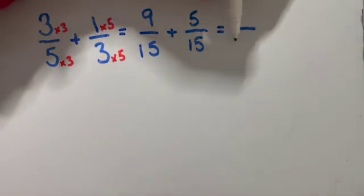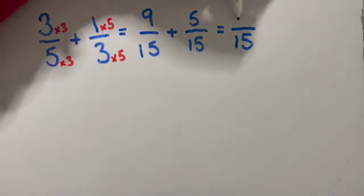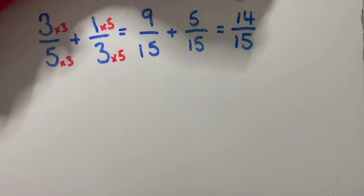So remember, if they're the same, the answer has the same denominator. Nine add five is 14. And that's my answer.